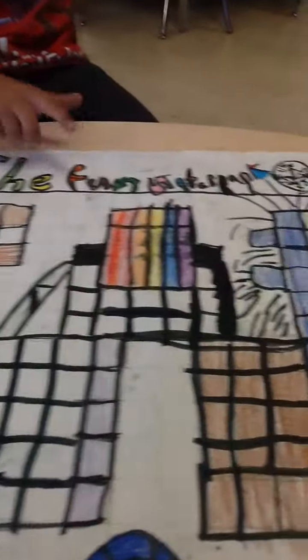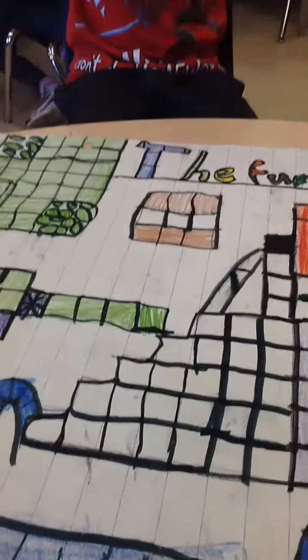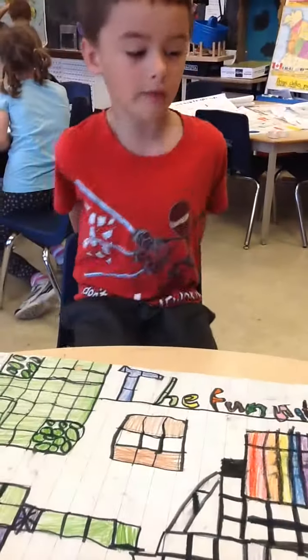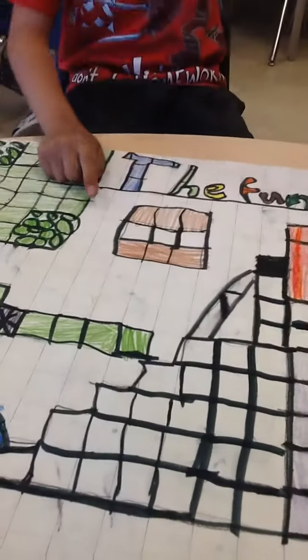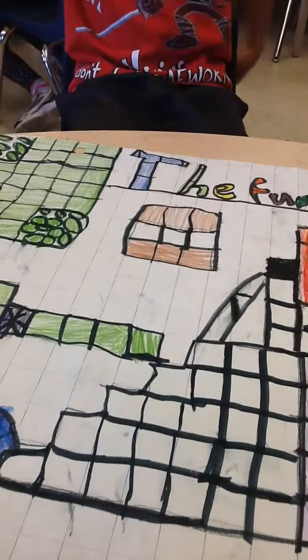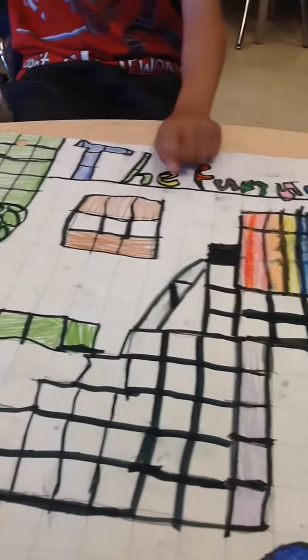This is my water park, and the title is the Fun Water Park. I had to see how many kids could go in my water park. Each square or grid represents one kid, and then I counted them all up.